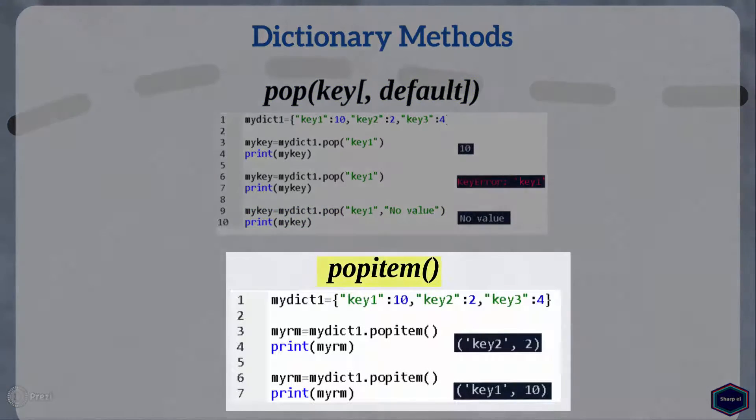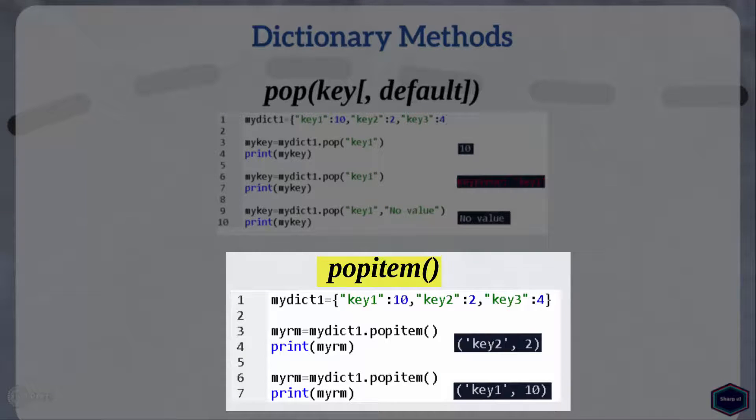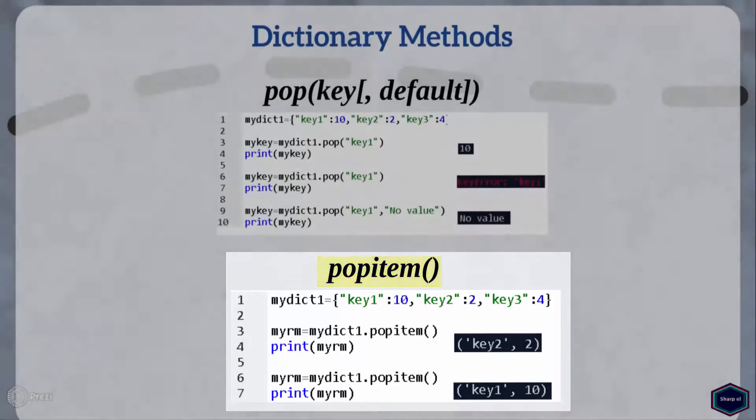The popitem method is just like pop but it removes and returns a random key-value pair from the dictionary. If the dictionary is empty, popitem raises the KeyError exception.